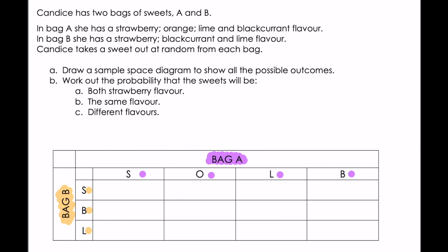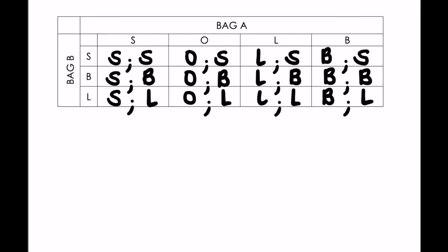Filling out the sample space: the first option is strawberry from bag A and strawberry from bag B, then strawberry from bag A with blackcurrant from bag B, then strawberry from bag A with lime from bag B, then orange from bag A with strawberry from bag B, orange with blackcurrant, and continuing until the diagram is fully filled out with all combinations.